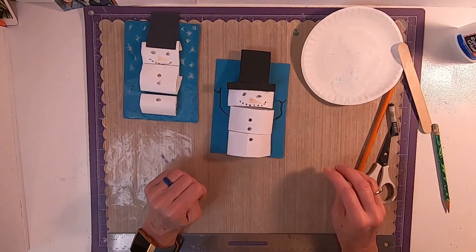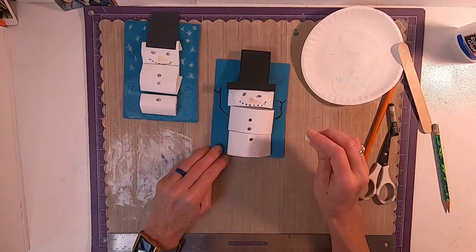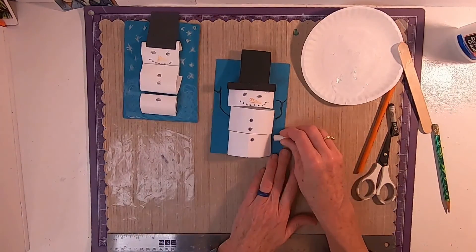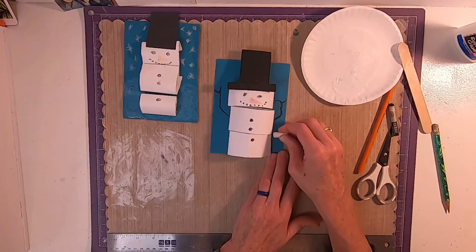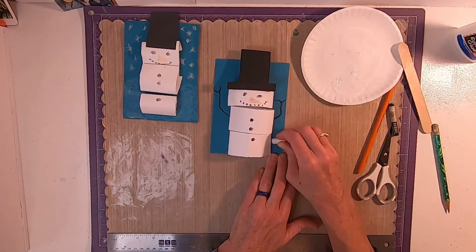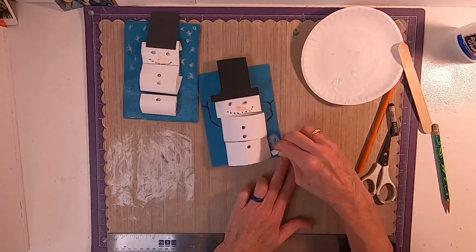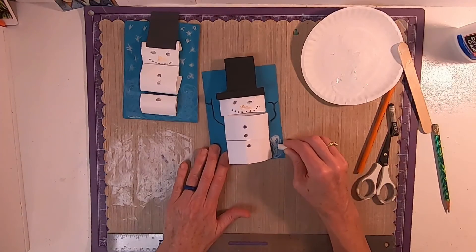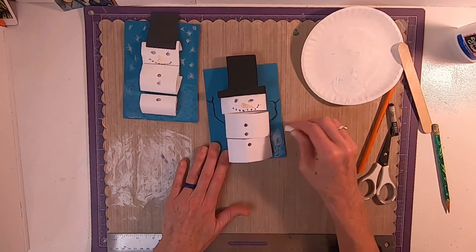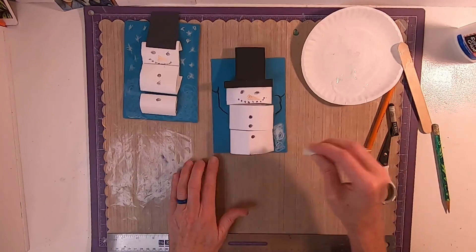Now, we want to make snow. So, let's start drawing our snow. So, he sits in the snow, doesn't he? So, we can make loop-de-loops to make it look like fluffy snow. Good job!